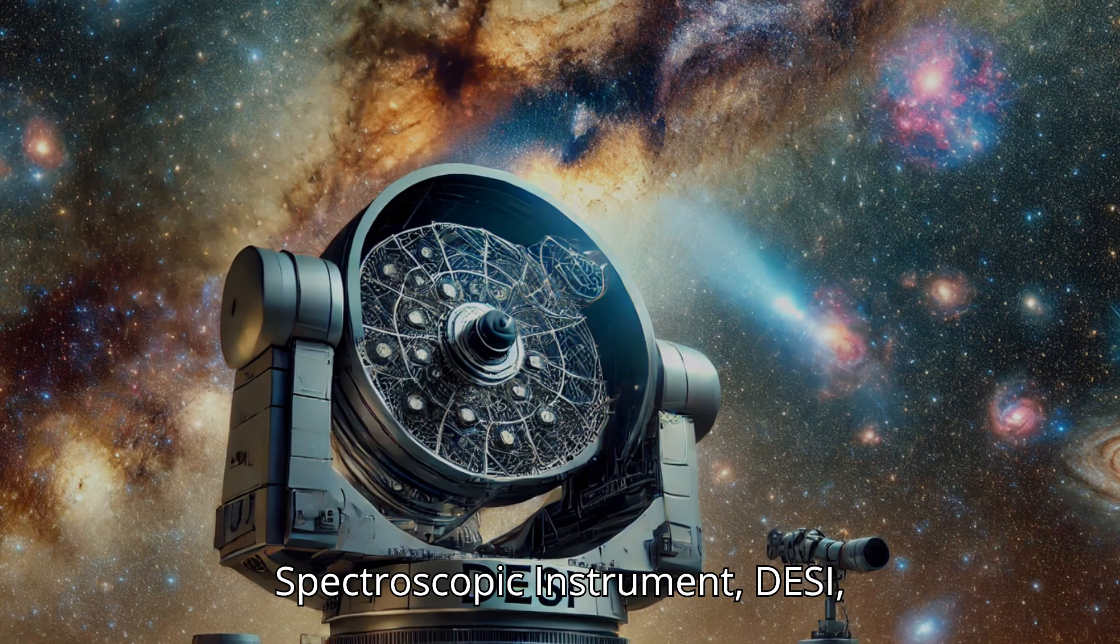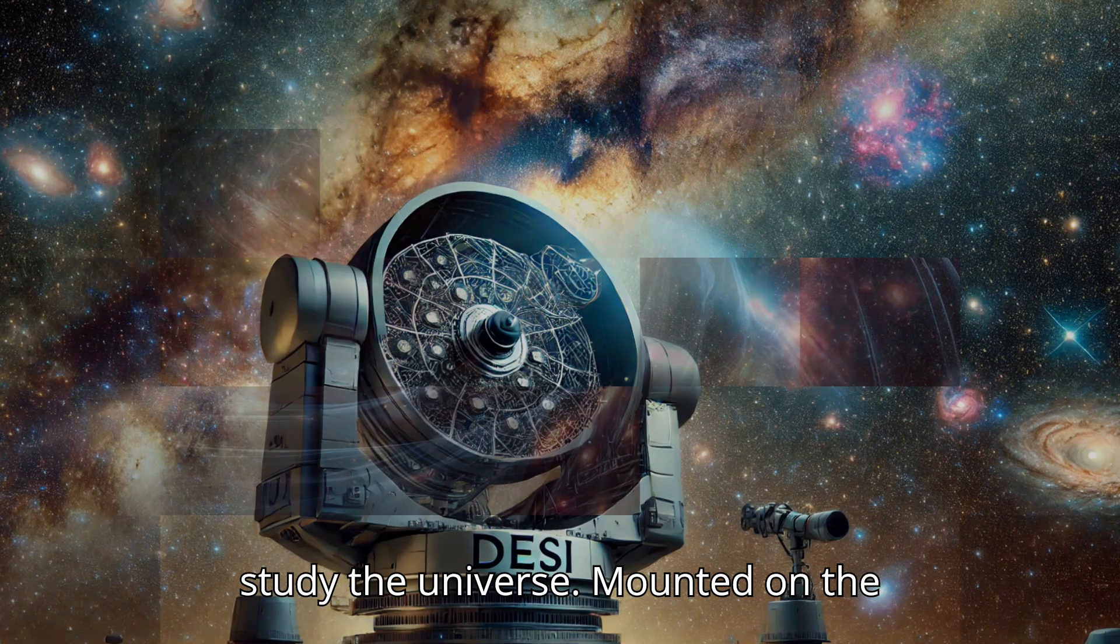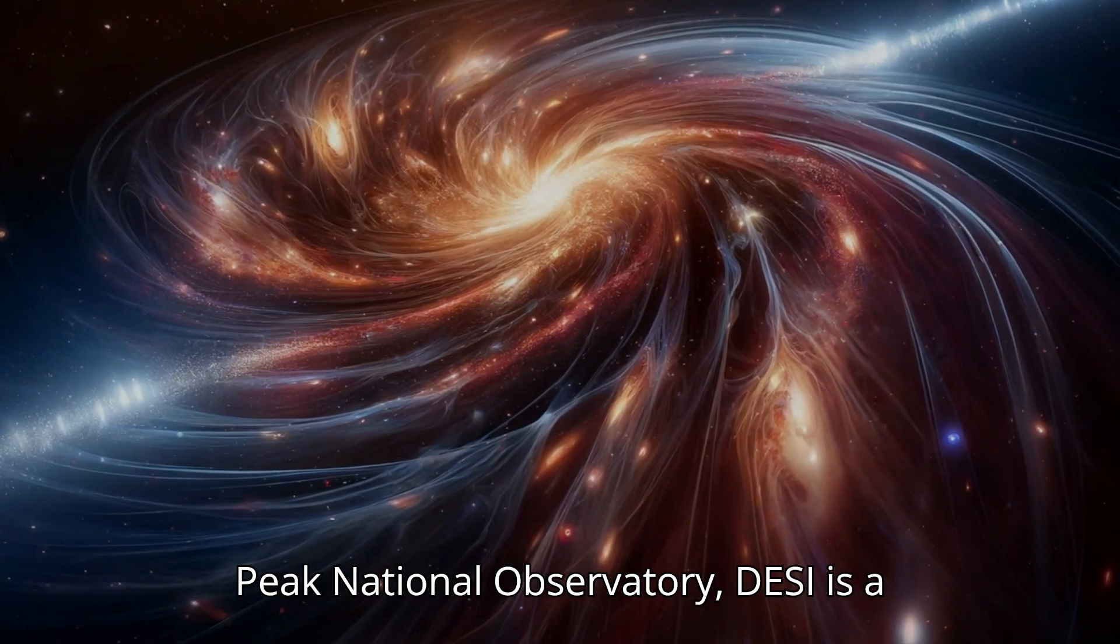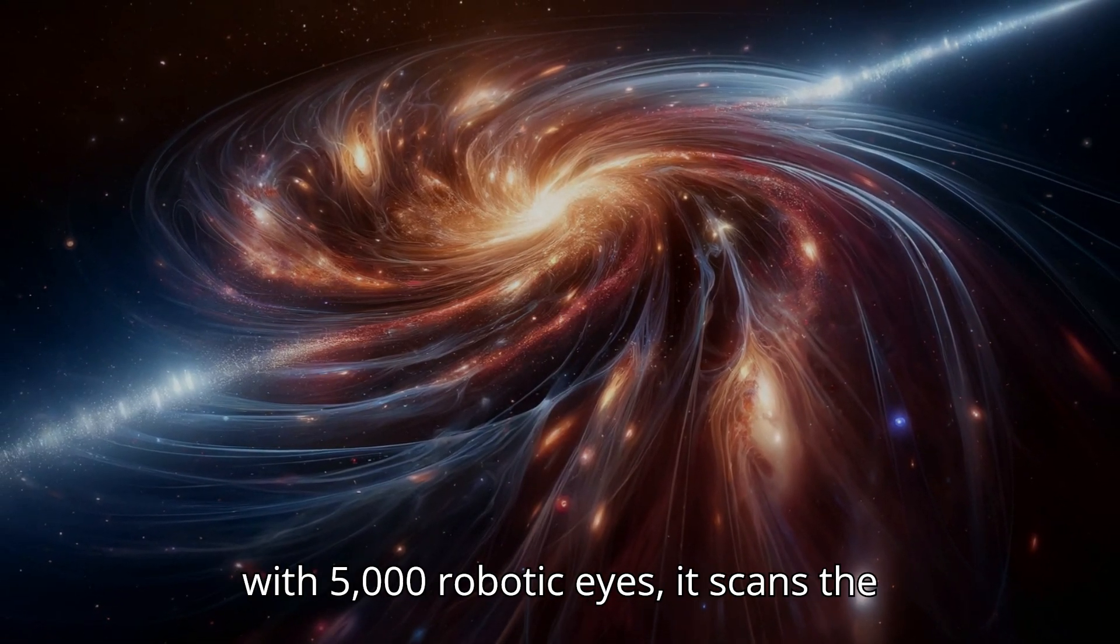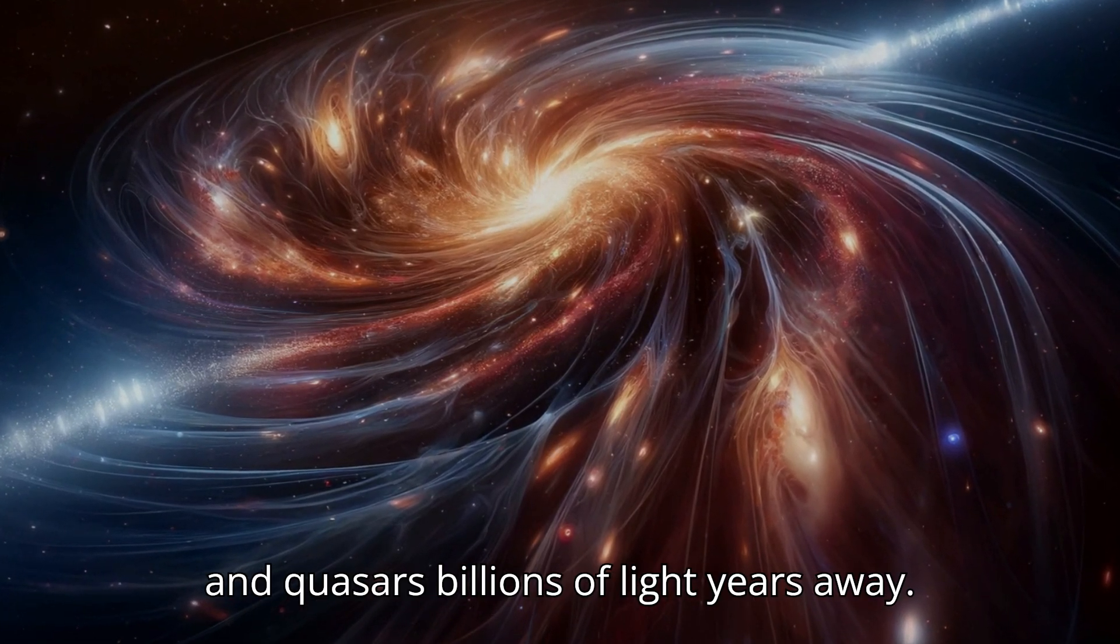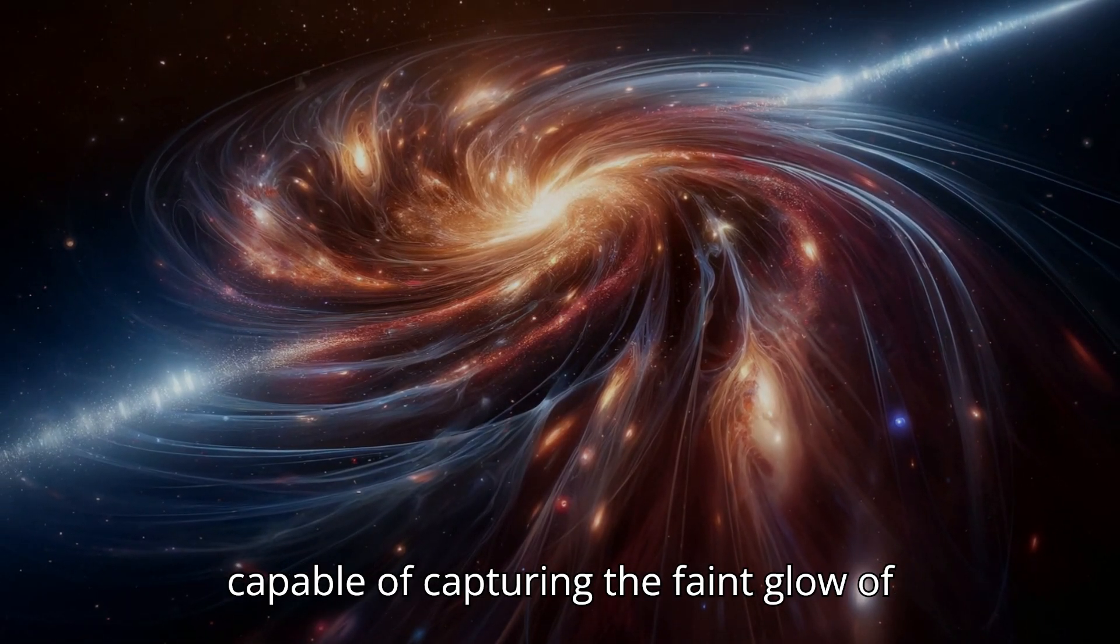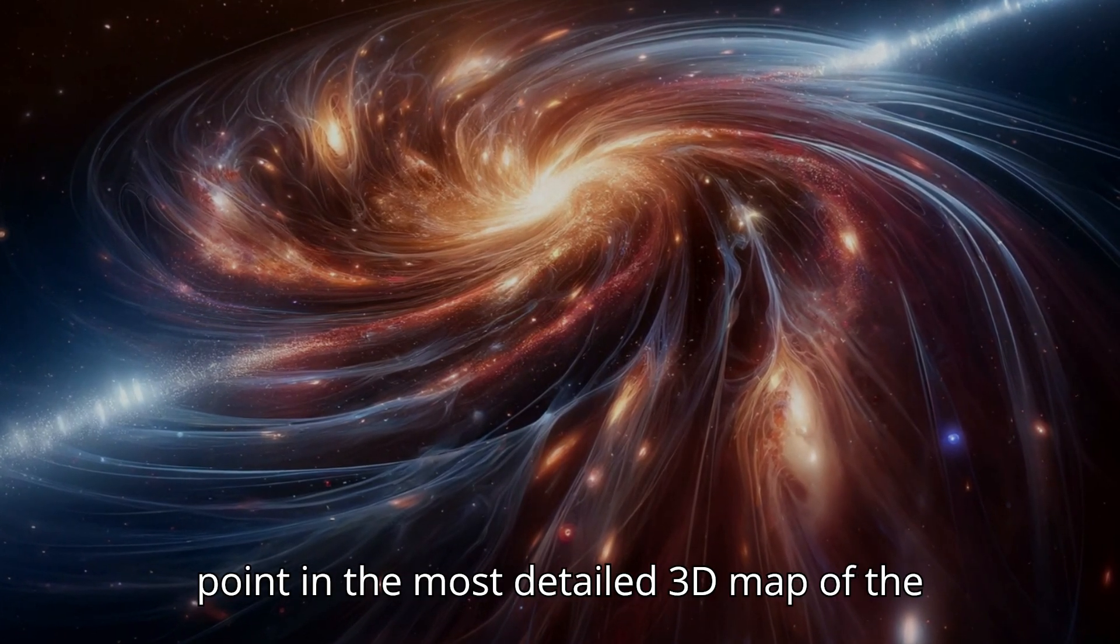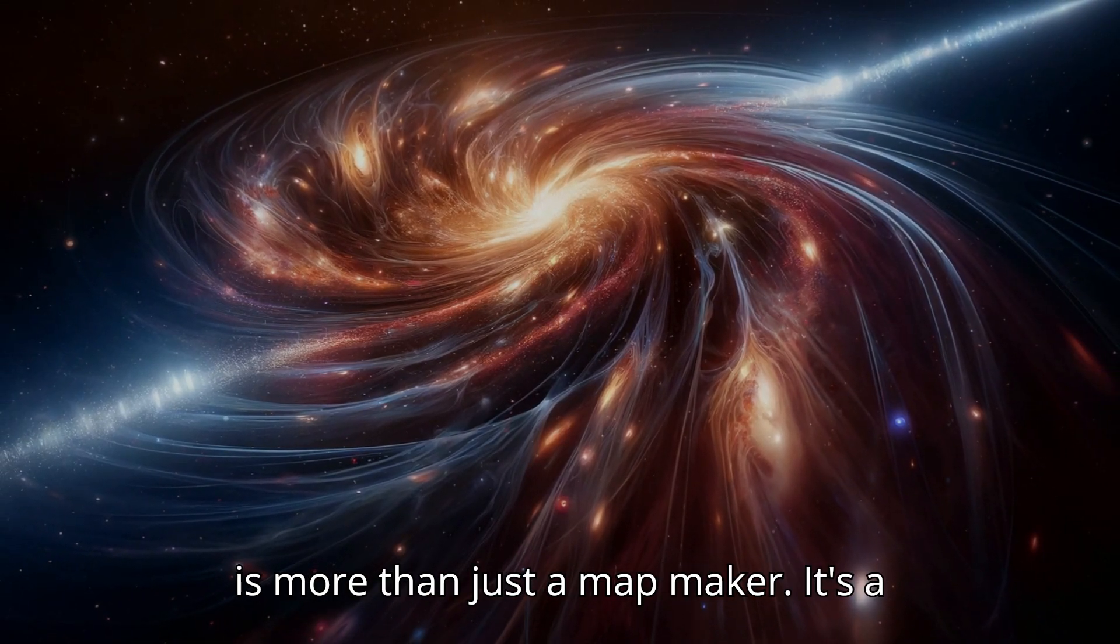The Dark Energy Spectroscopic Instrument, DESI, represents a monumental leap in how we study the universe. Mounted on the Nicholas U. Mayall telescope at Kitt Peak National Observatory, DESI is a marvel of modern engineering. Equipped with 5,000 robotic eyes, it scans the night sky, collecting light from galaxies and quasars billions of light-years away. Each of these eyes is a fiber-optic cable capable of capturing the faint glow of celestial objects, turning it into a data point in the most detailed 3D map of the universe ever created. But DESI is more than just a map maker.